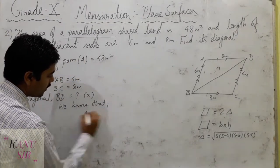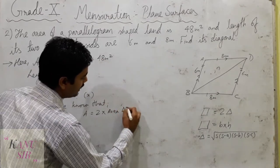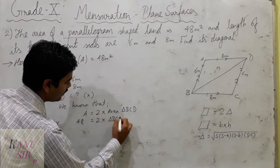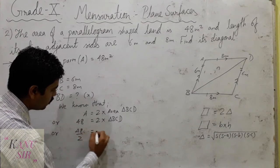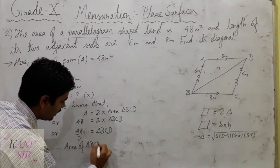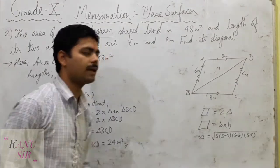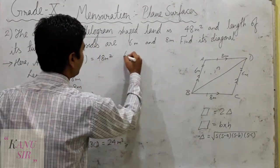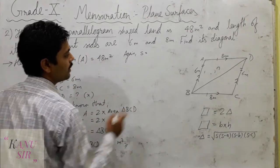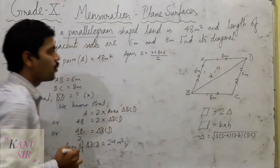We know that area of parallelogram equals 2 times area of triangle. Taking triangle BCD: 48 divided by 2 gives area of triangle BCD equal to 24 square meters. Now we have a hint to find the diagonal. We need to find the semi-perimeter S, where S = (x + 8 + 6) / 2, that is S = (x + 14) / 2.